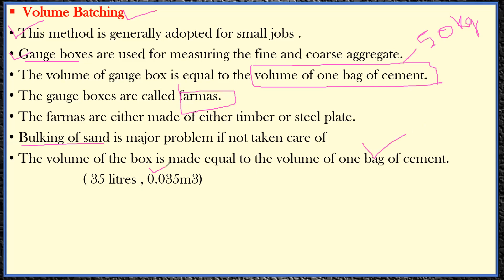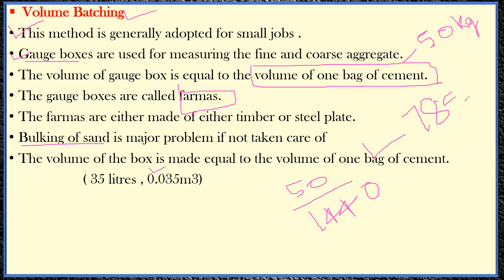The volume of the gauge box — also called the firma box — is made equal to the volume of one bag of cement, which comes out to be 0.035 cubic meters, or 35 liters. This is calculated as: one bag is 50 kg, divided by the unit weight of cement which is 1440 kg/m³, giving 50 ÷ 1440 ≈ 0.0347, which we round to 0.035 cubic meters.